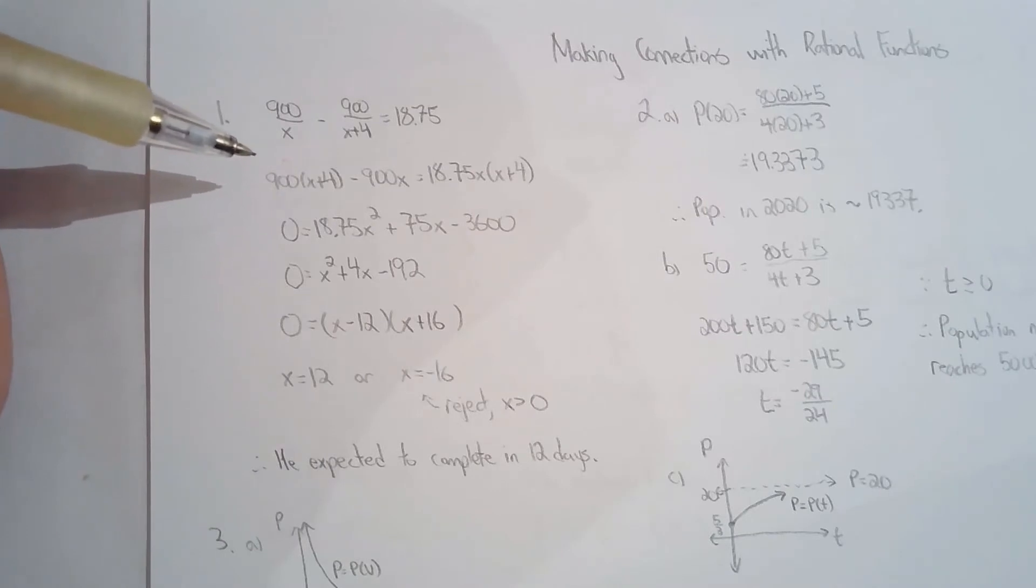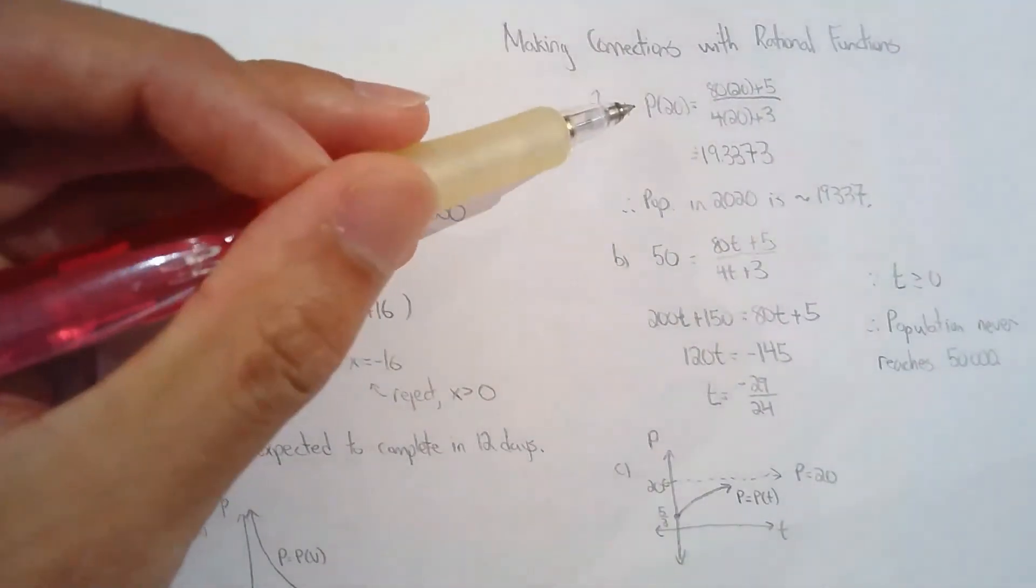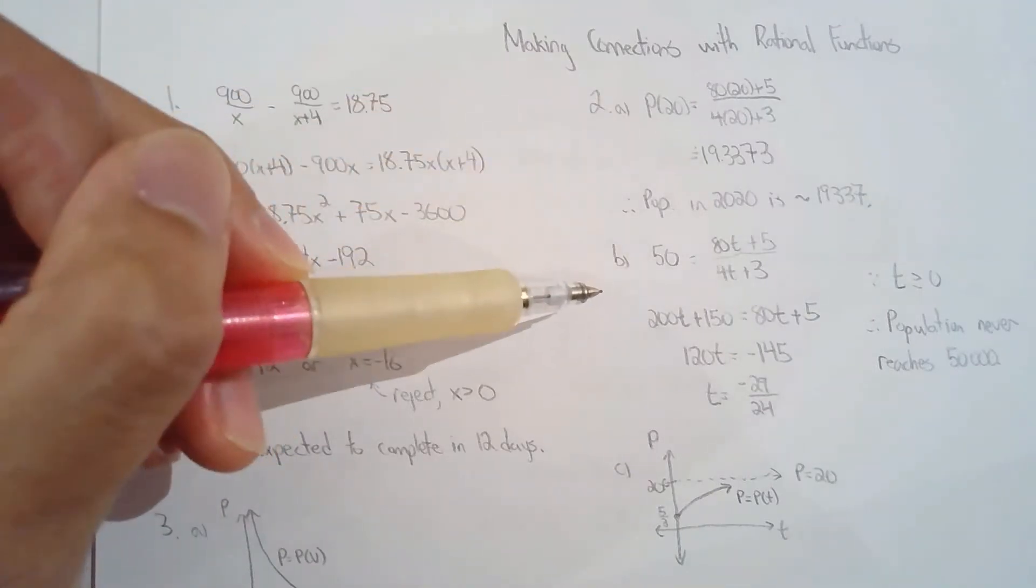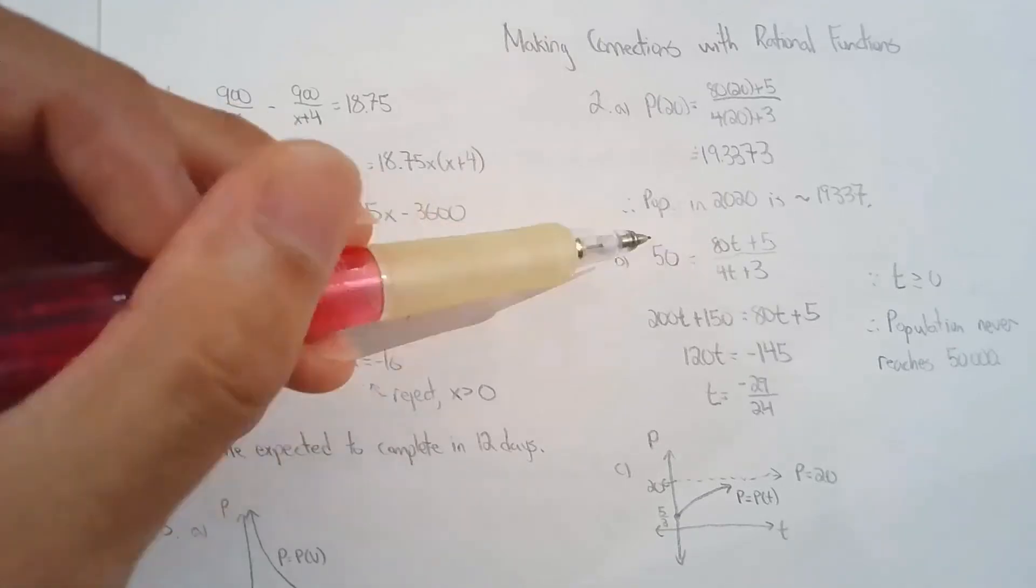Question two is pretty easy, it's basically what we did in the handout together, so I won't spend too much time on it. You're basically solving for the population because you have the model. You can solve for the population in the future, you can solve for the time that it takes to reach a certain population.